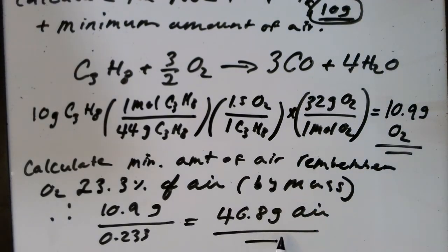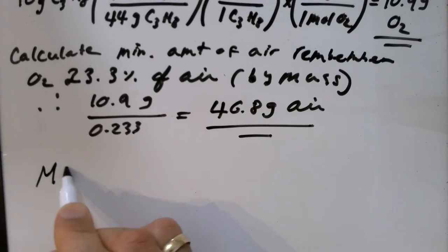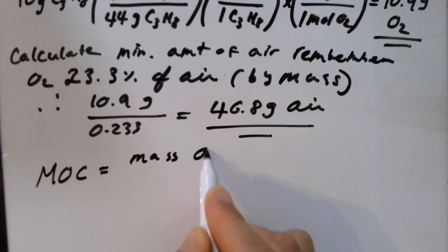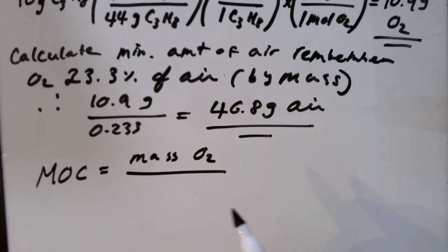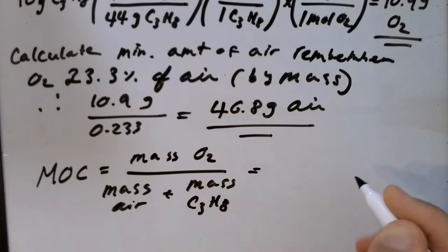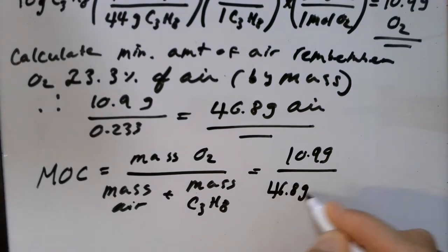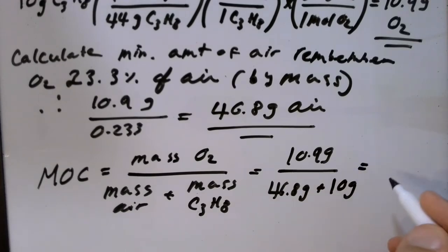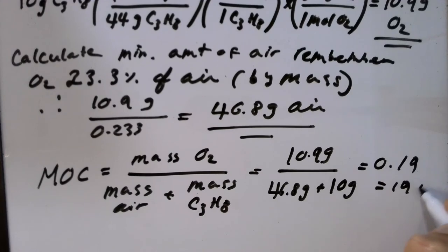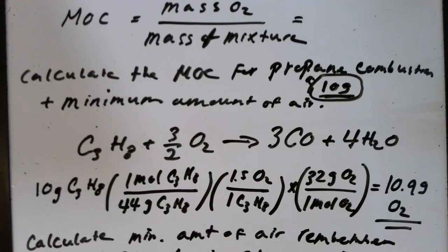If I have 10 grams of propane, I need about 46.8 grams of air to burn that. To calculate the MOC, it will be the mass of oxygen divided by the mass of the mixture — that's the mass of air plus the mass of the fuel source, propane. So 10.9 grams divided by (46.8 + 10) grams gives 0.19, or 19 percent. That is my MOC, my minimum oxygen content required to burn propane.